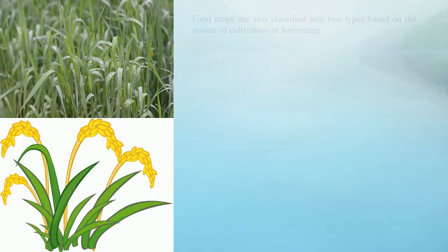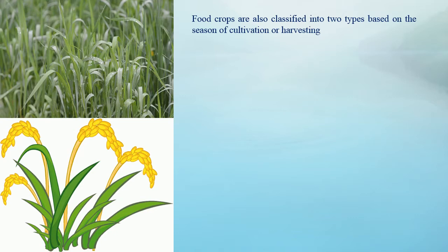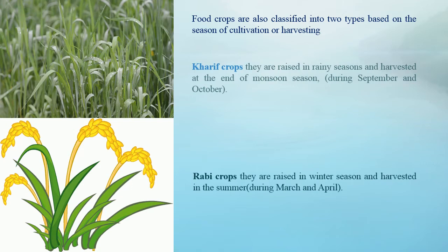Food crops are also classified in two types based on the season of cultivation or harvesting. The first one is Kharif Crops. Kharif crops are raised in the rainy season and harvested at the end of monsoon season, that is during September and October. Rabi Crops are raised in winter season and harvested in the summer, that is during March and April.